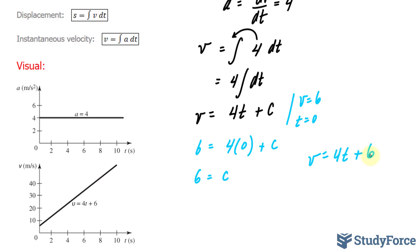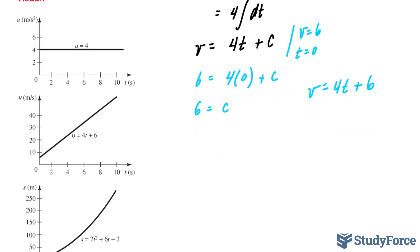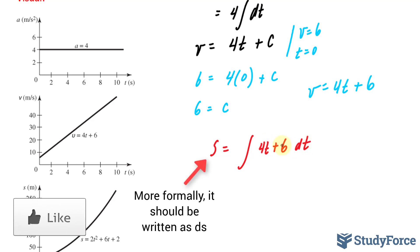Next, I need to find the displacement equation, and I can do that by taking the integral of the following equation. Displacement will be shown as the letter s. s is equal to the integral of 4t plus 6 dt. I'll take the integral of each of these terms individually.